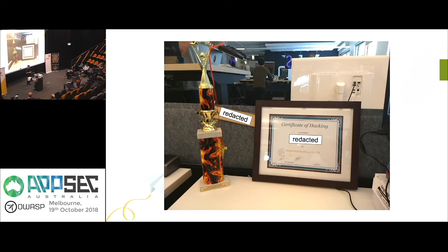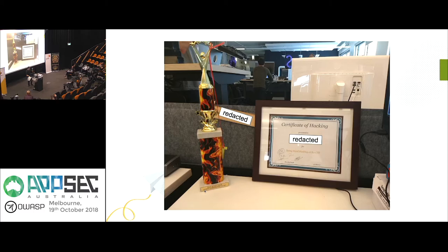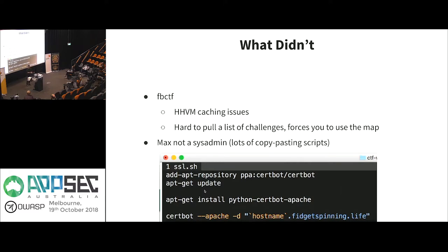We had some cool trophies and prizes. The flaming trophy was for the top 10 people along with a certificate of hacking signed by a few of us on the security team. There are a couple of these in the Melbourne office, which I was reminded of working out of Melbourne this week. For the top four people, we got them all Raspberry Pi Zeros and some peripherals — a fun, tangible thing. But nothing's better than the pride and personal fulfillment of being better than your coworkers at a CTF.